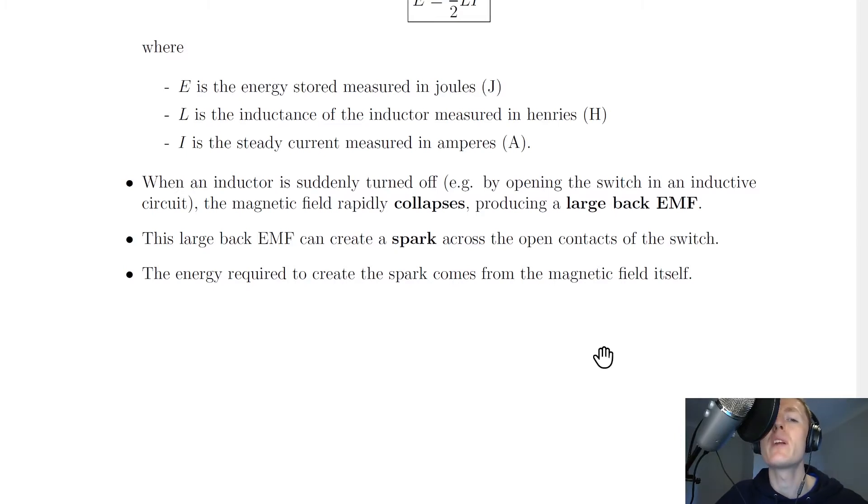And a very important thing to be aware of is when you're using inductors, when an inductor is suddenly turned off, for example by opening the switch in an inductive circuit, the magnetic field rapidly collapses, producing a large back EMF. This large back EMF can create a spark across the open contacts of the switch. The energy required to create the spark comes from the magnetic field itself.